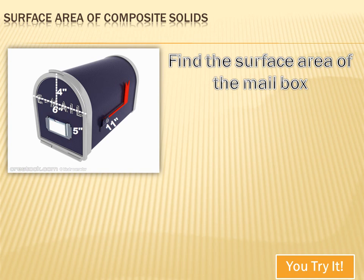Let's figure out the surface area of this mailbox. First thing we have to do is see what individual solids were put together to create the composite figure. I can see two solids: a rectangular prism, and sitting on top of it, half of a cylinder. So we've got half of a cylinder and a rectangular prism. Now we just have to figure out the surface areas that each of those are going to contribute to the composite figure.